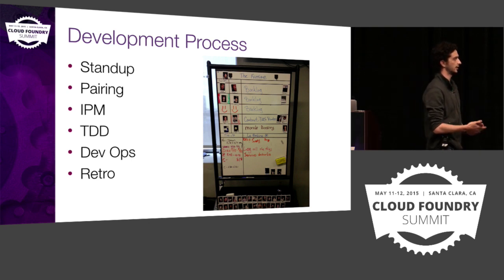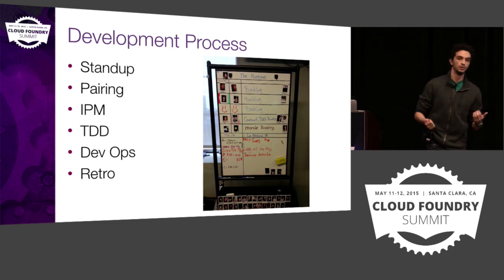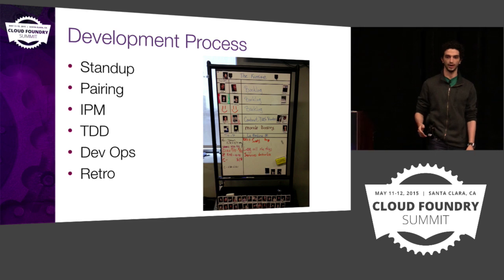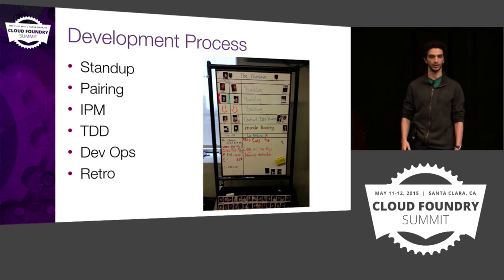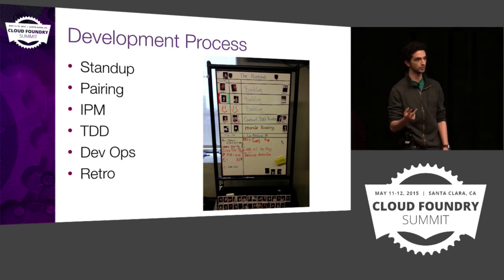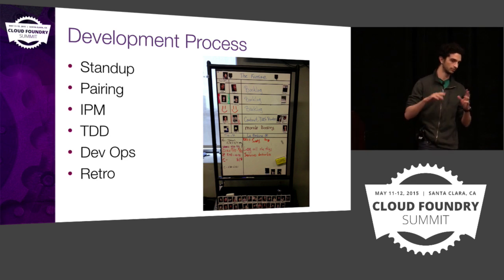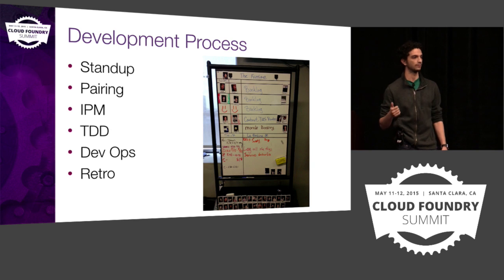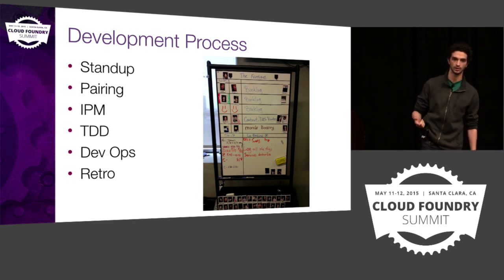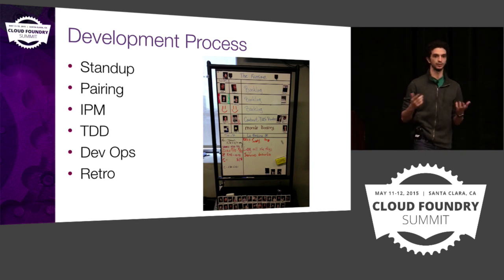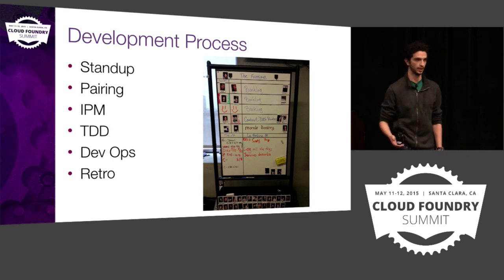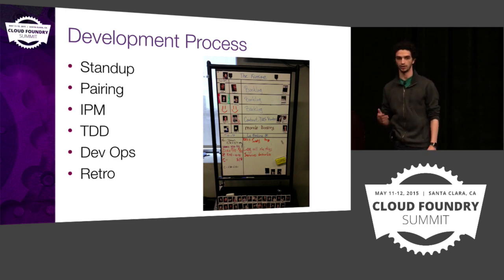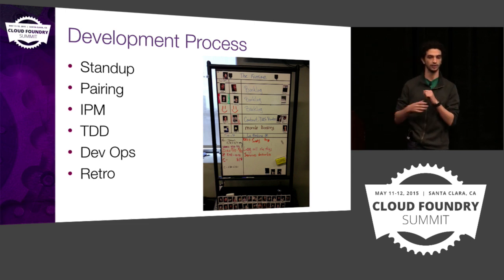We'll start with stand-up and pairing. Every morning we do a stand-up — our morning meeting where we talk about what happened yesterday. We have two stand-ups: a big stand-up that's organization-wide where everybody at Pivotal comes in person or digitally, and we ask if people need help or have interesting things to share with the rest of the organization, and we talk about events. The little stand-up has a similar format: what did we do yesterday, does anyone need help, and finally we set up pairing.